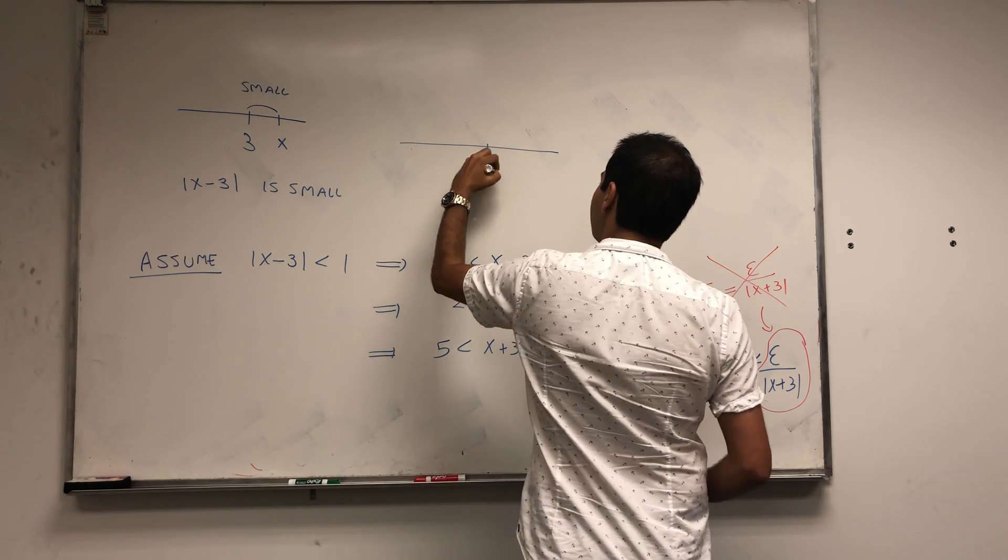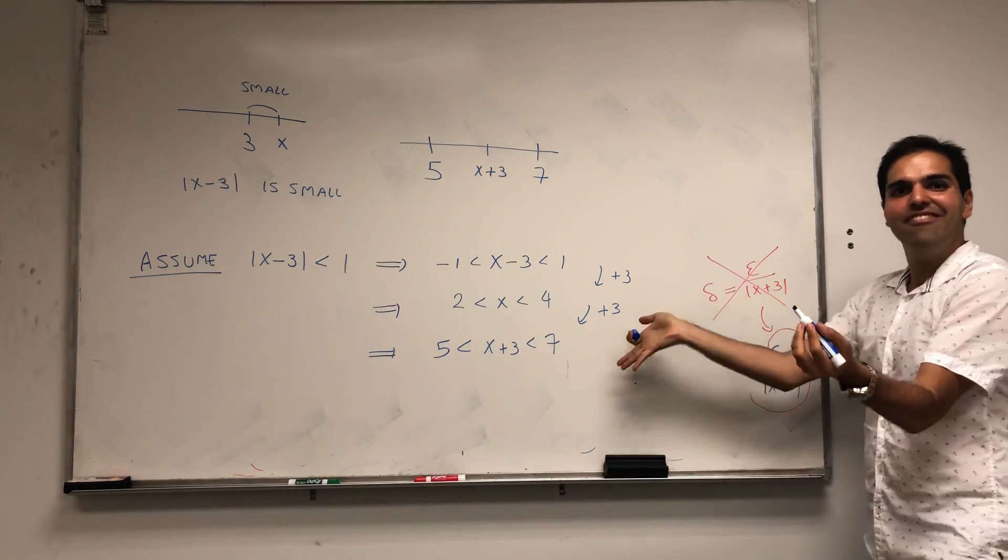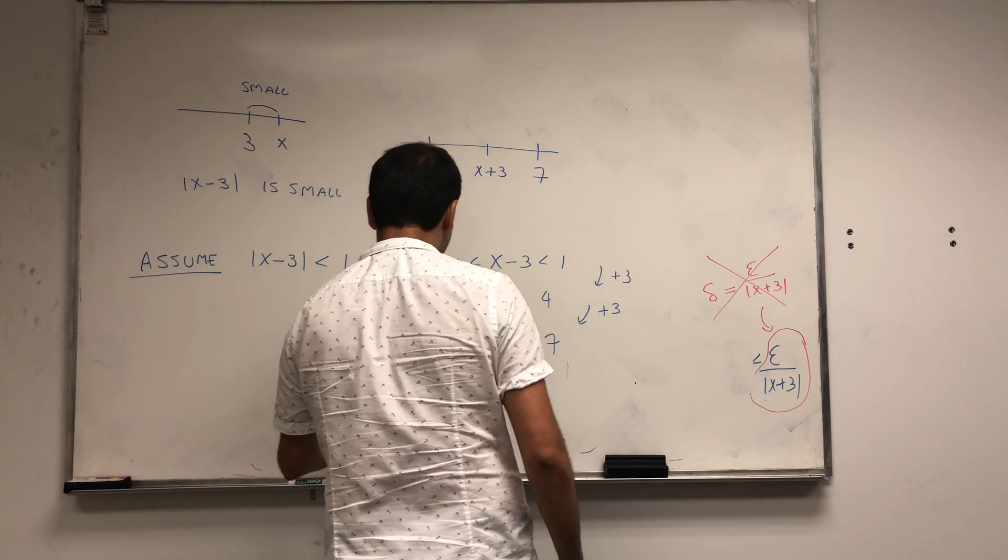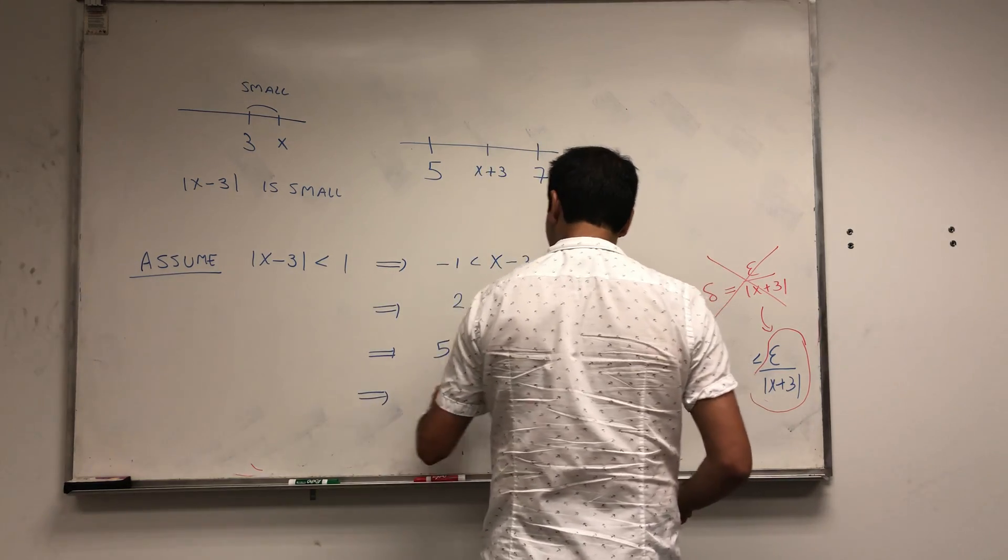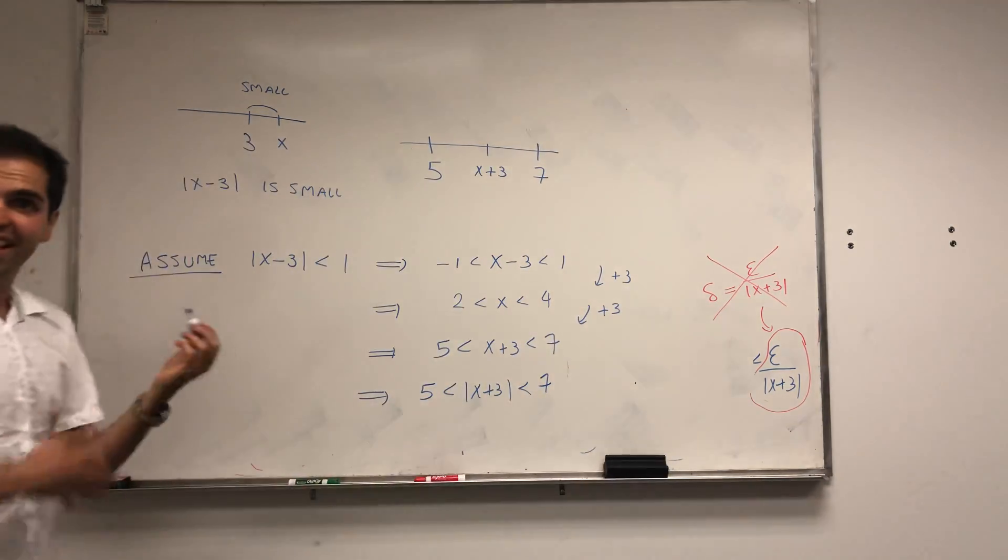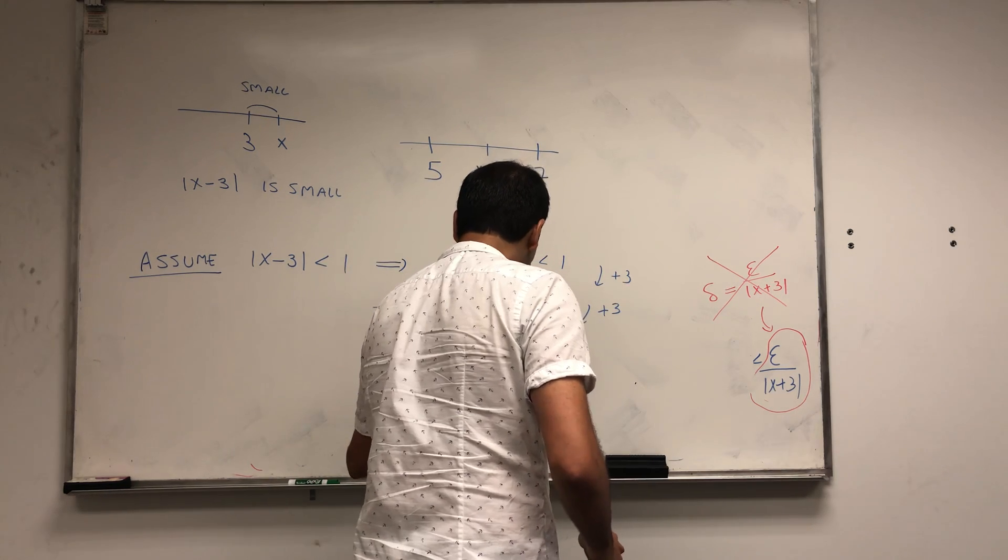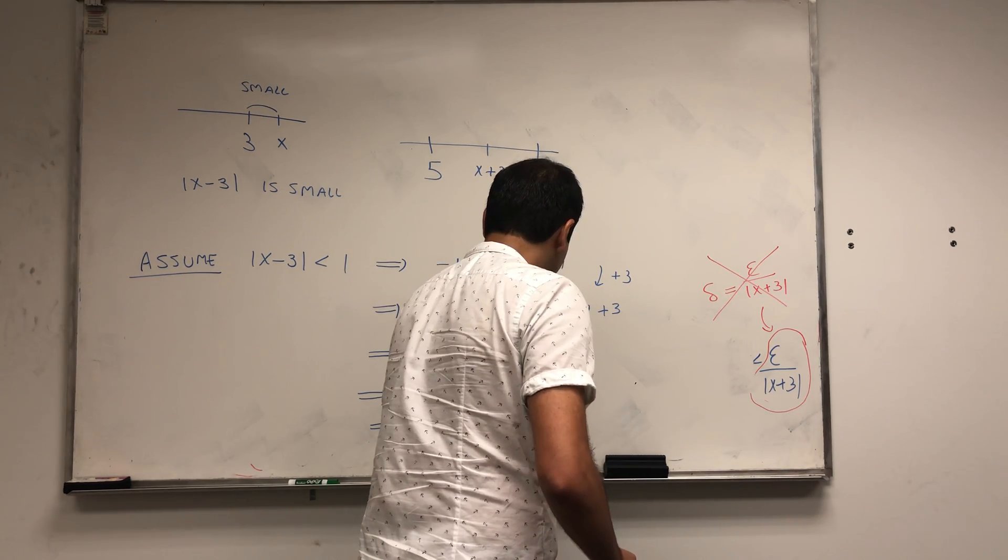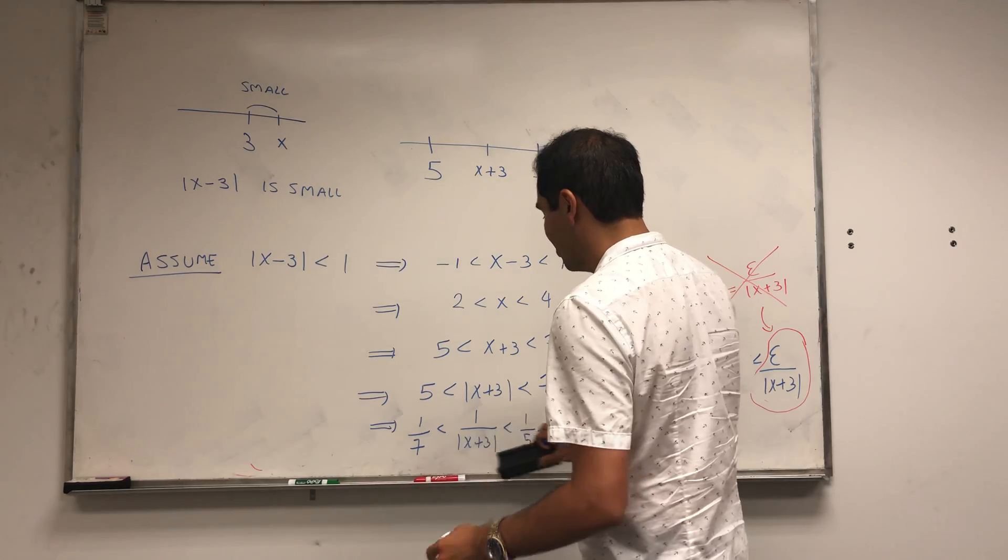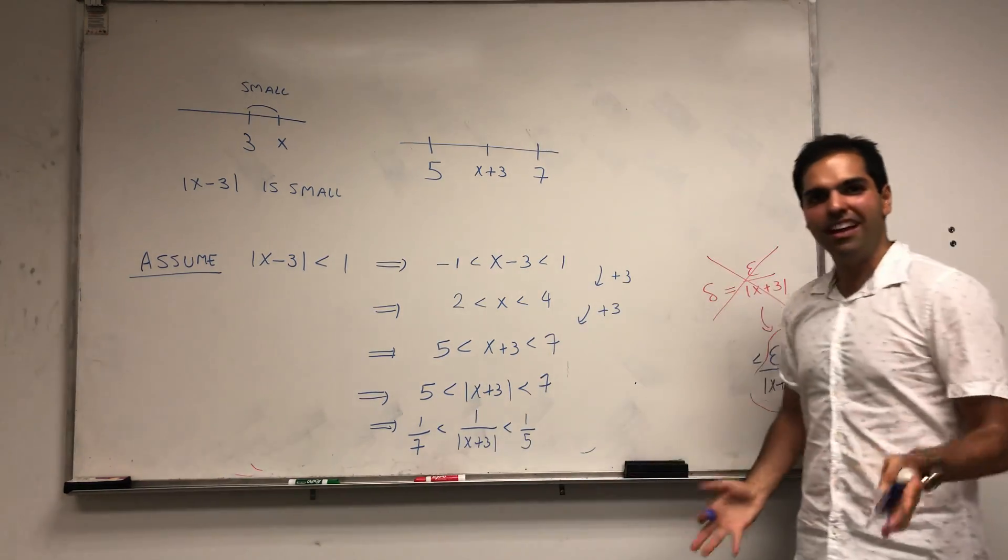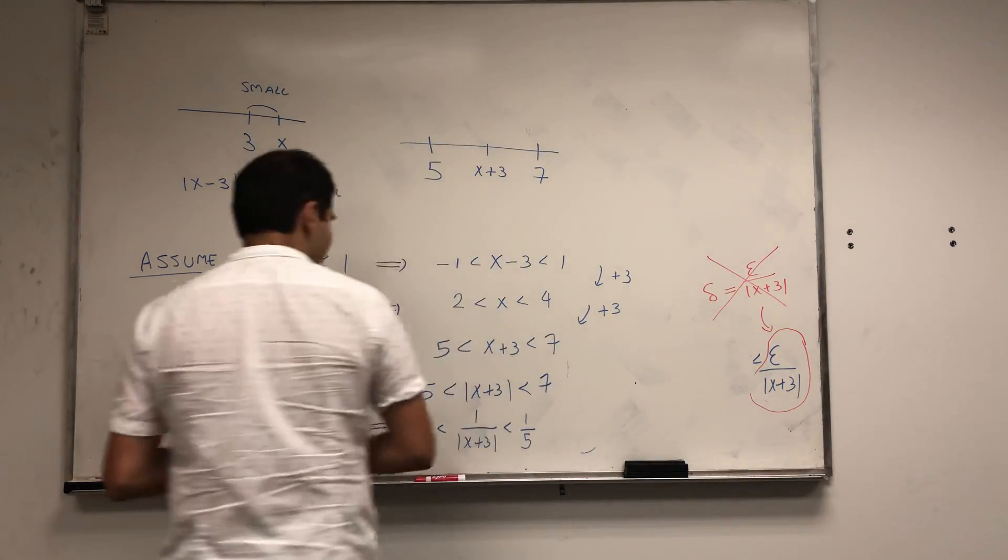Since everything is positive, the absolute value of x plus 3 is between 5 and 7. Now take reciprocals, and when you take reciprocals you have to change the order. 1 over x plus 3 is between 1 seventh and 1 fifth. If you made a mistake and put 1 seventh and 1 fifth, you'd be like this is weird, I know 1 fifth is greater than 1 seventh.